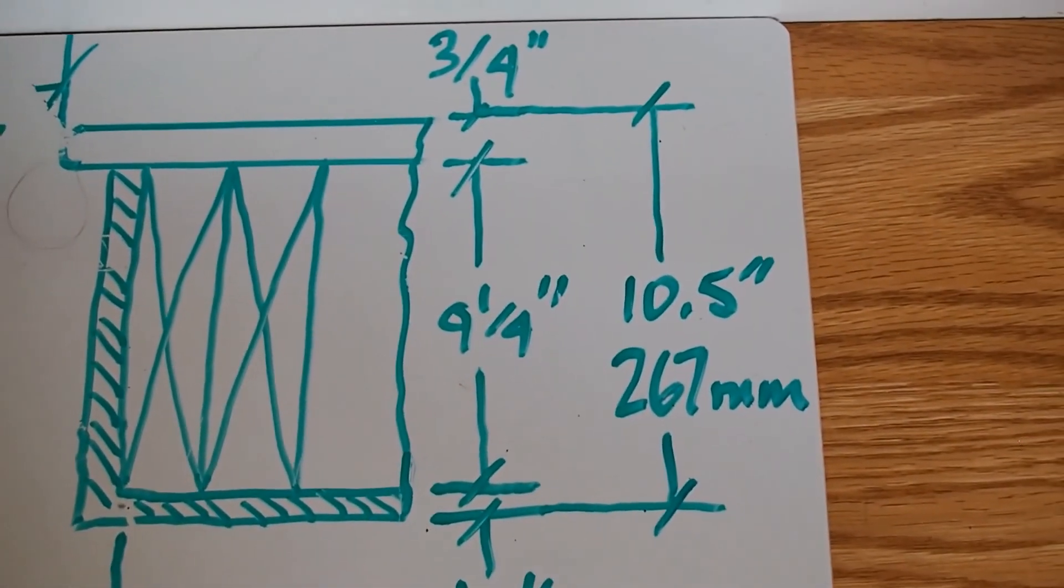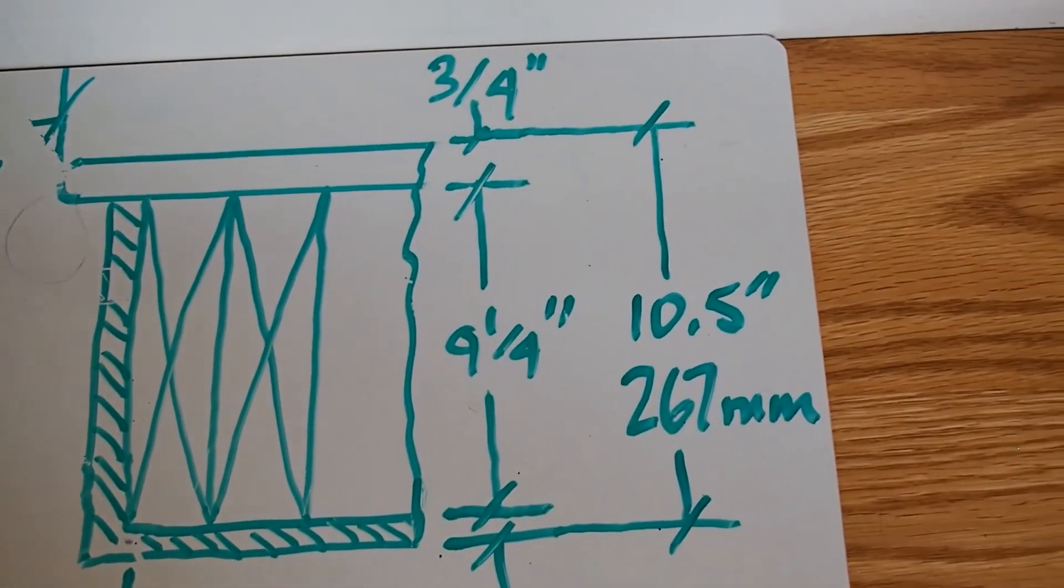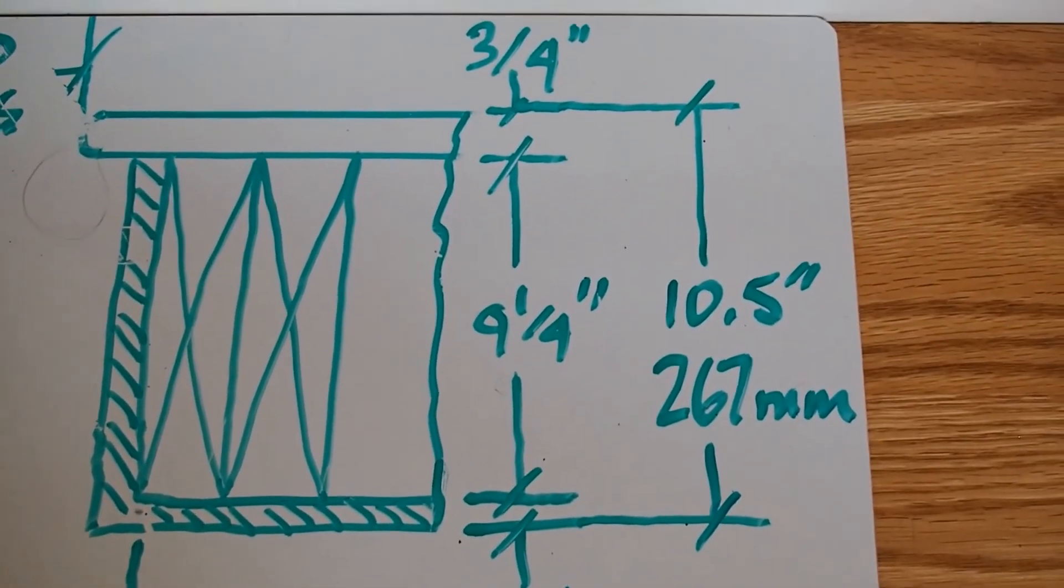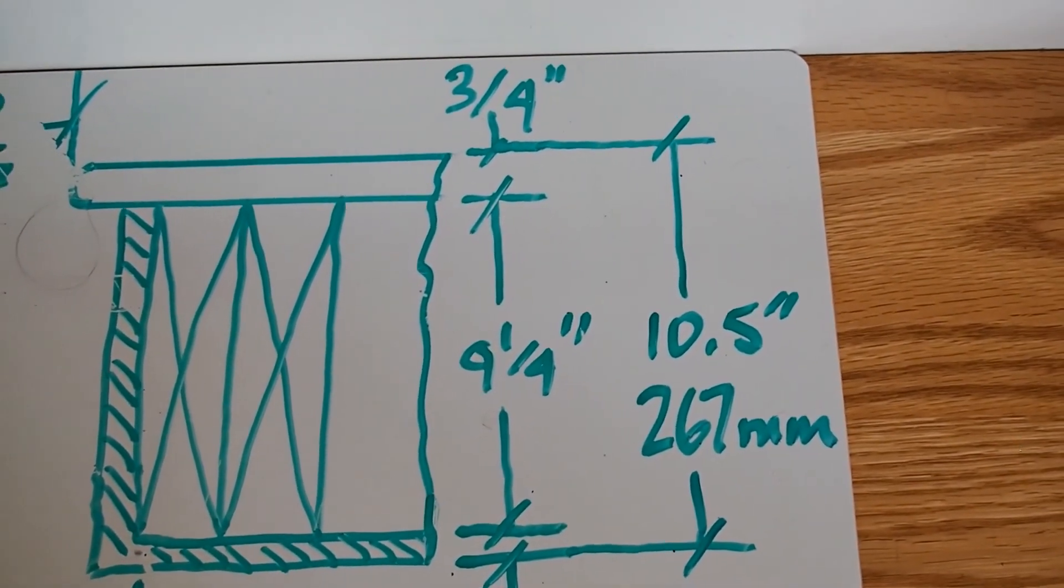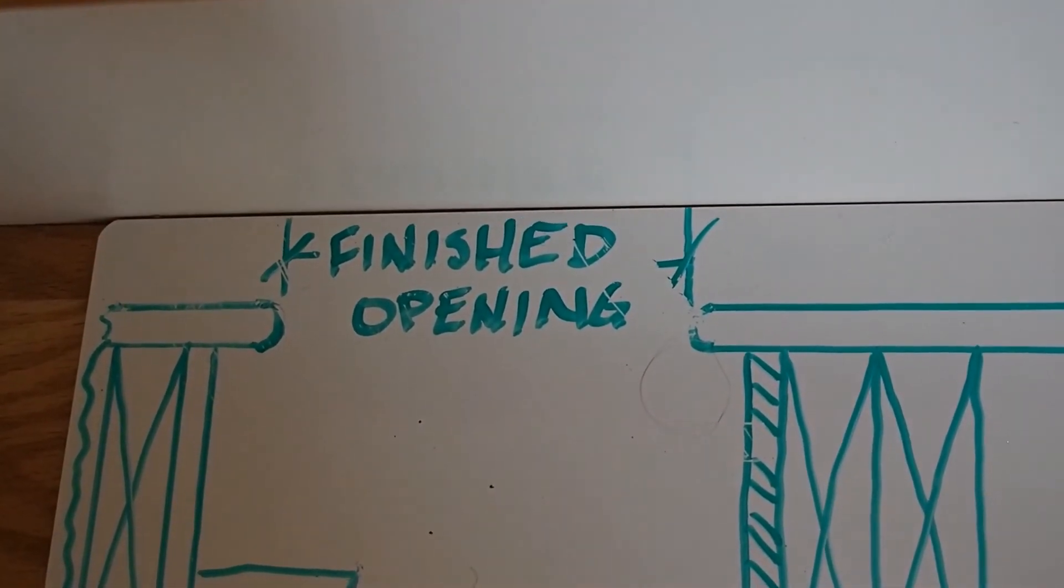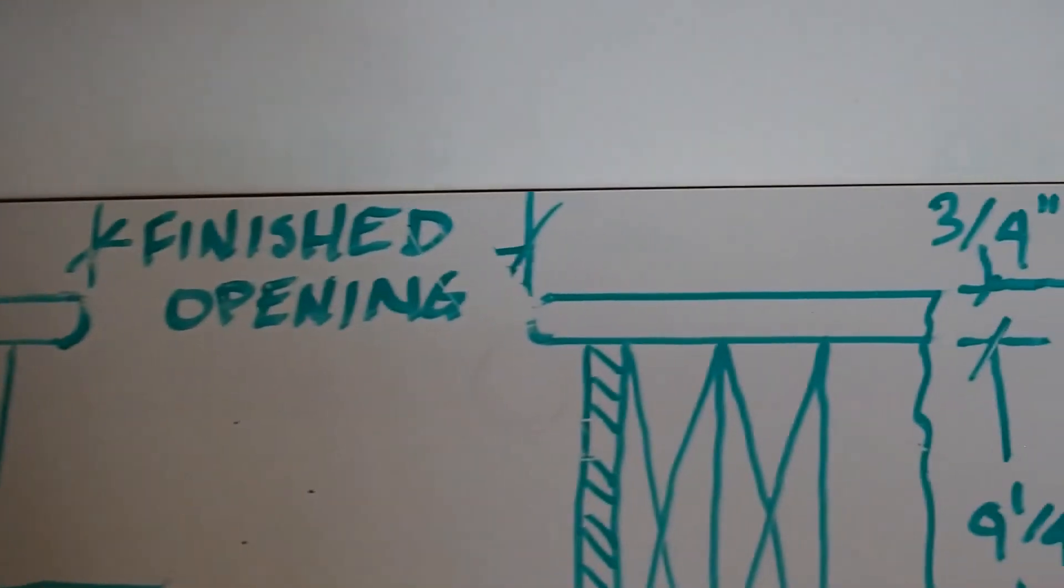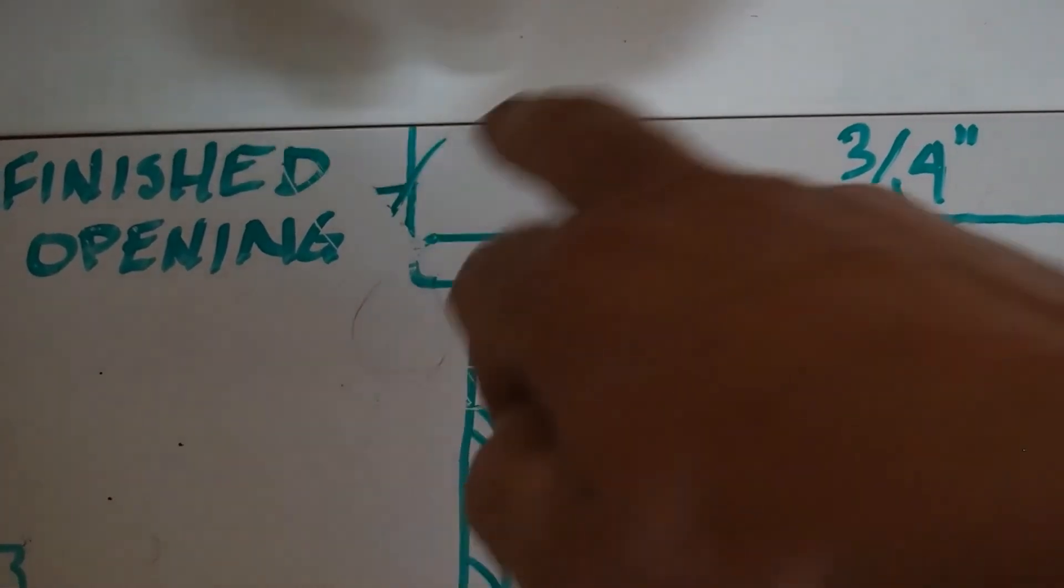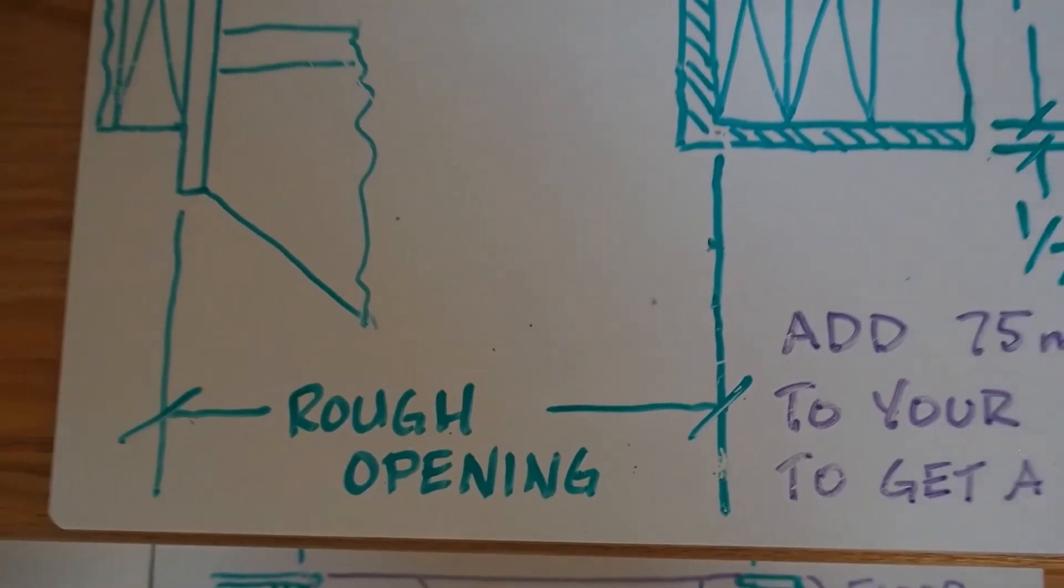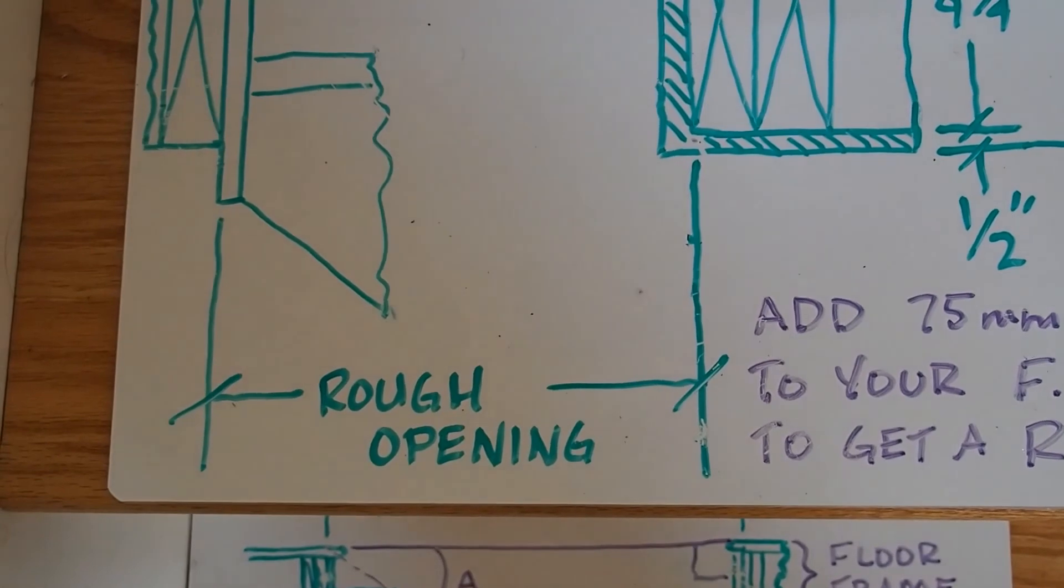So this ten point five inches is just an example. It's not super realistic, because this is not how things are done most of the time today, but it'll do for an example. The other thing I'd like to draw your attention to is that we've got a finished opening. That's the distance from the nosing on the stair to whatever's happening on the other side. And we've got a rough opening. The rough opening is the distance from the framing on either side.